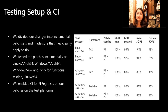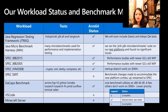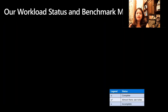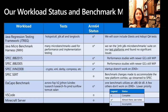Here is a quick matrix of the SPECjbb 2015 benchmark and how we tested it on different systems. Here is a quick overview of our workload status and benchmarking matrix — this is only a subset; please check our GitHub page for the full set. We have enabled several of these, while some had problems with respect to architecture-specific code.